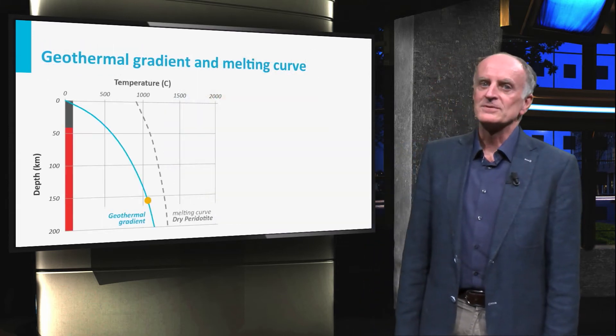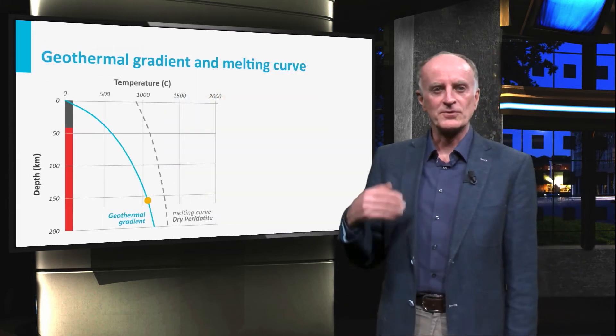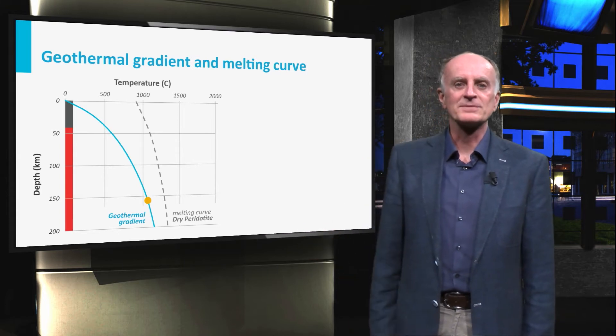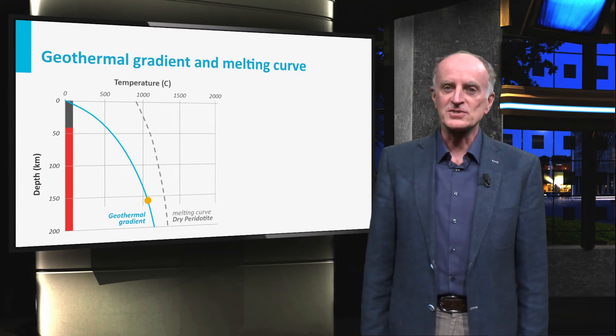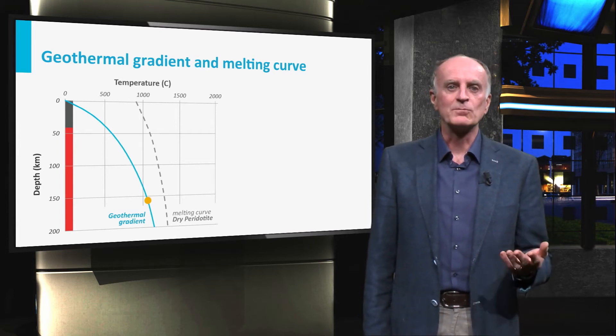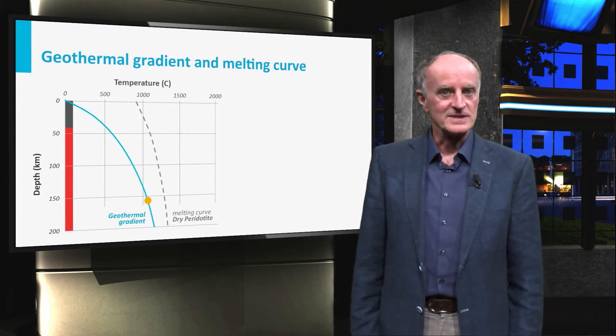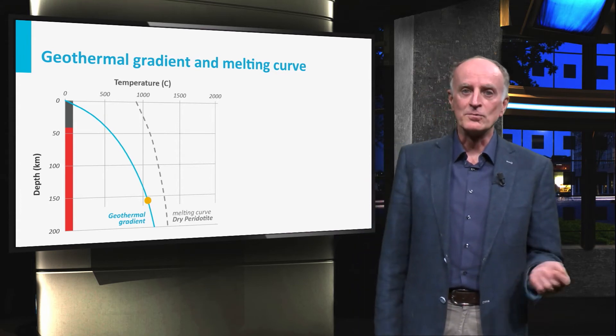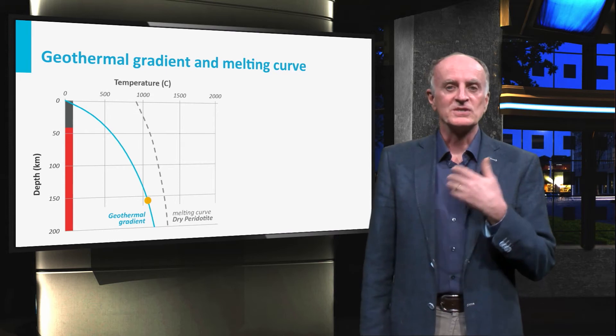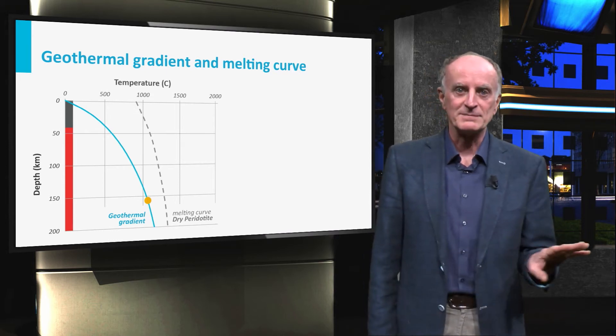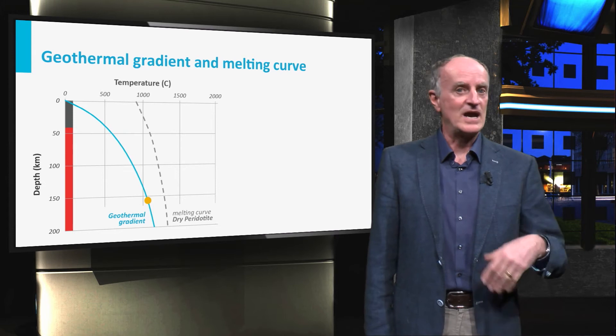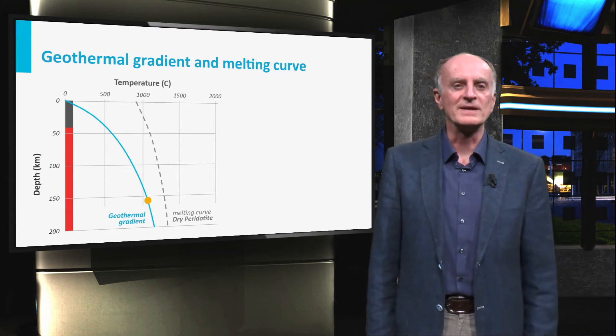In this diagram you see two curves. The geothermal gradient indicates temperatures found at different depths in the Earth. The dashed curve shows the temperatures at which typical mantle rocks melt. As you can see, temperatures are lower than melting temperatures, which means that rocks are solid and no magma is generated. Now how can we bring then a rock to melt?